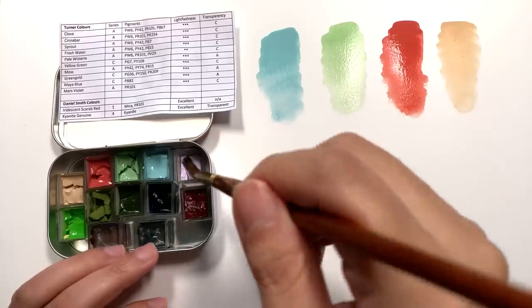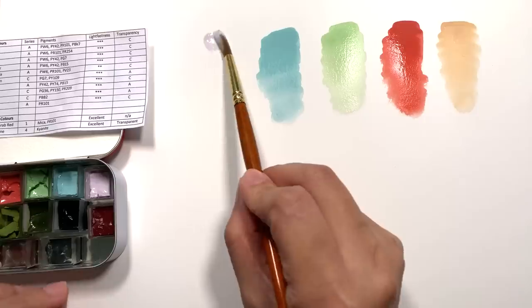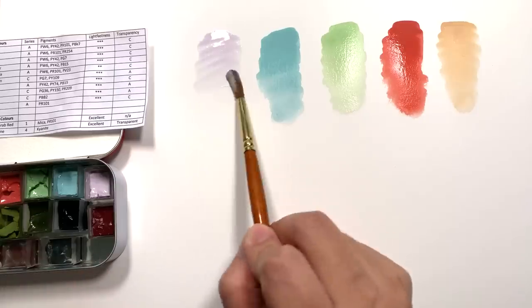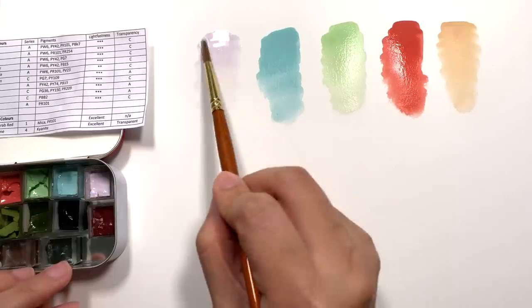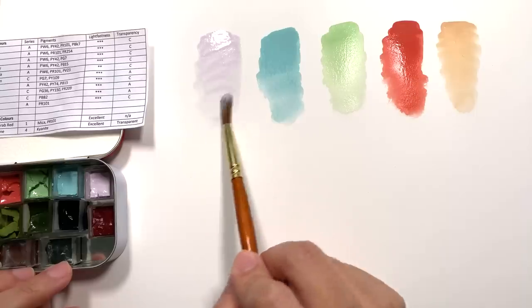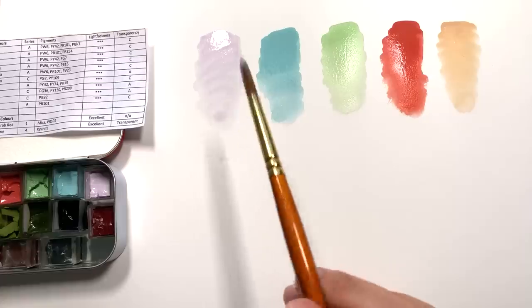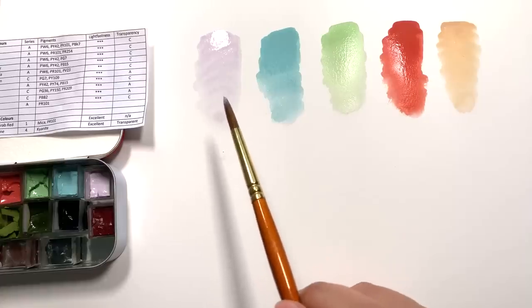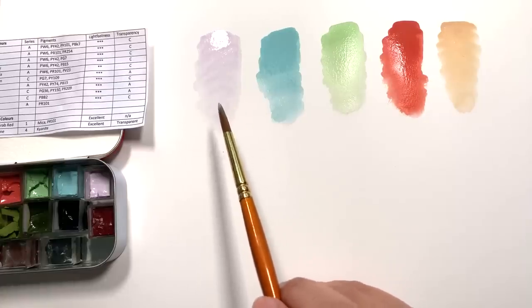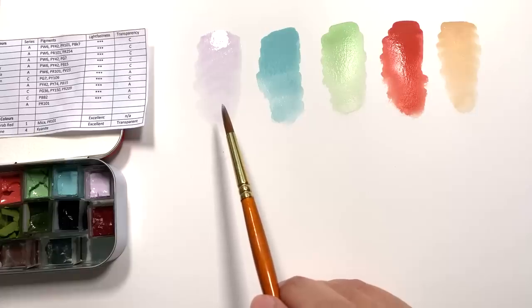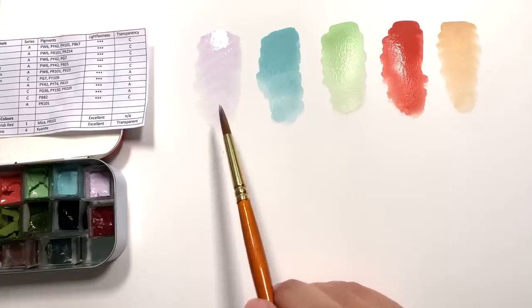I really like these two together and the cinnabar makes it a nice accent color. Then we have pale wisteria. This is a paler color to the Daniel Smith's wisteria. And I would say this is a little bit more warmer, with a little bit more red in it than the Daniel Smith's version.